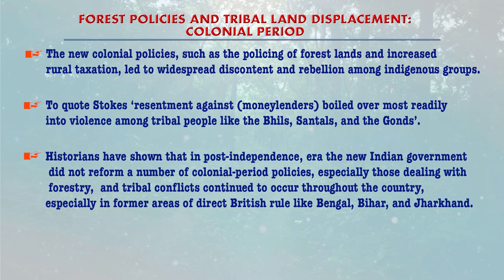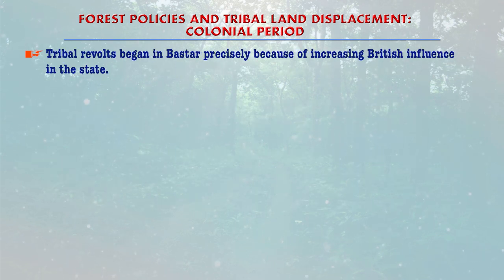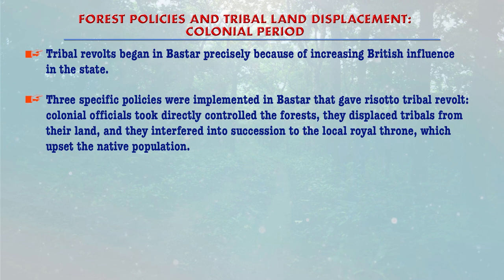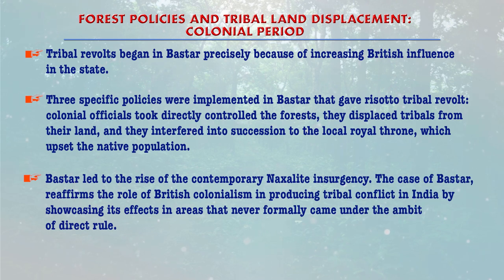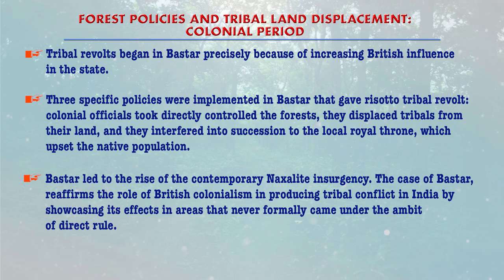Tribal revolts began in Bastar precisely because of increasing British influence in the state. Three specific colonial policies gave rise to tribal revolt: colonial officials took direct control over the forests, displaced tribes from their land, and interfered in succession to the local royal throne, which upset the native population. Bastar led to the rise of the contemporary Naxalite insurgency, and the case of Bastar reaffirms the role of British colonialism in producing tribal conflict in India.